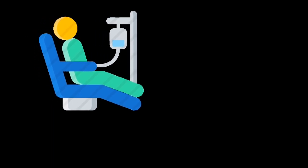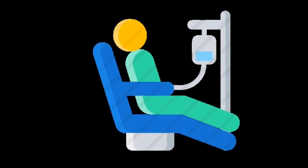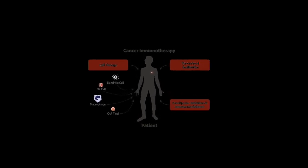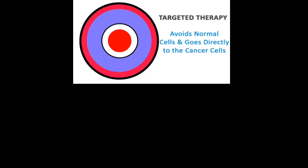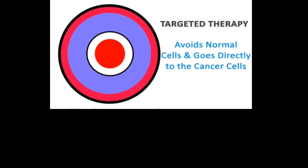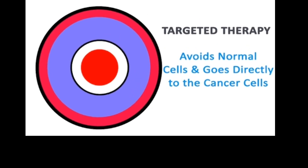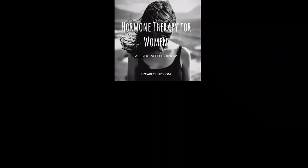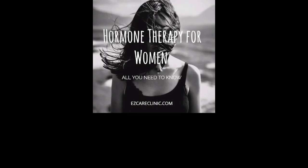Number 3: Chemotherapy — a type of cancer treatment that uses drugs to kill cancer cells. Number 4: Immunotherapy — a type of treatment that helps your immune system to fight cancer. Number 5: Targeted therapy — targets specific cancer cells that help them grow, divide, and spread. Number 6: Hormone therapy — treatment that slows or stops the growth of breast and prostate cancer that uses hormones to grow.